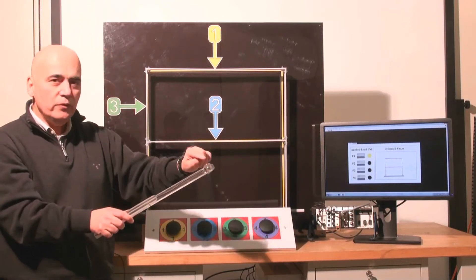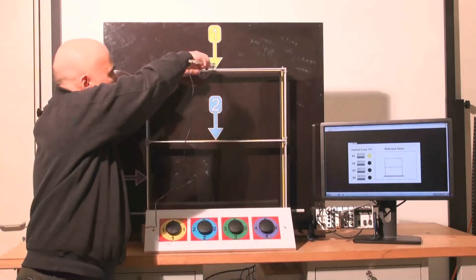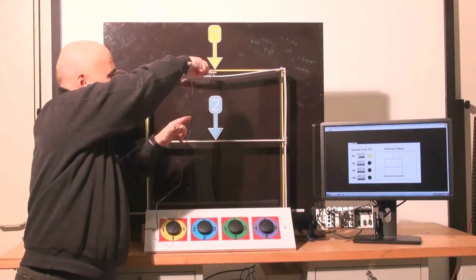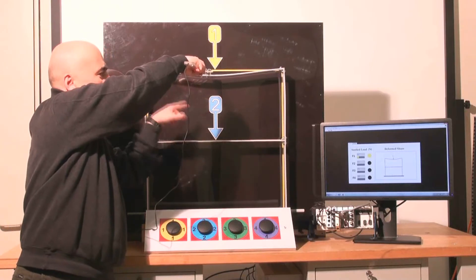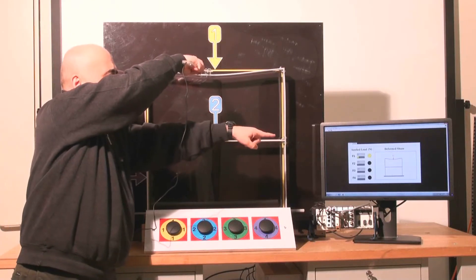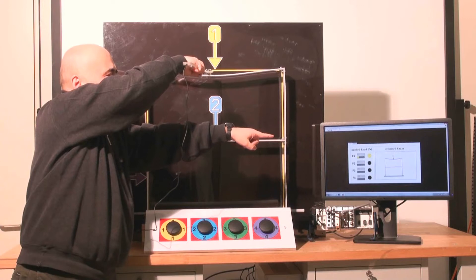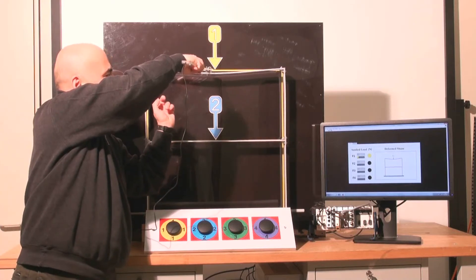So if instead of loading with my finger, I simply load the frame, I can compare directly the deformation here of the structure to the result of the calculation and I can decide how tight is the calculation to the reality.